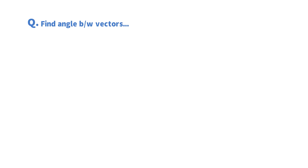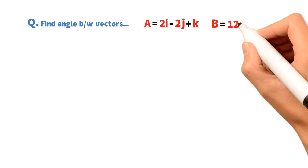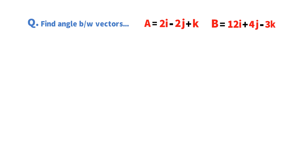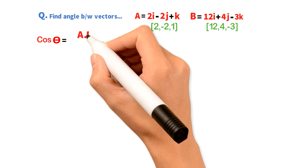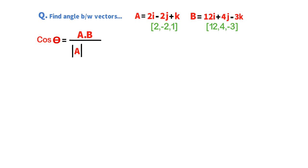Find the angle between vectors A = 2i − 2j + k and B = 12i + 4j − 3k. The components of vector A are 2, −2, 1 and the components of vector B are 12, 4, −3. I will use the formula cos θ = (A·B) / (|A| × |B|). First I will find the dot product of A and B, then the magnitude of A, then the magnitude of B.